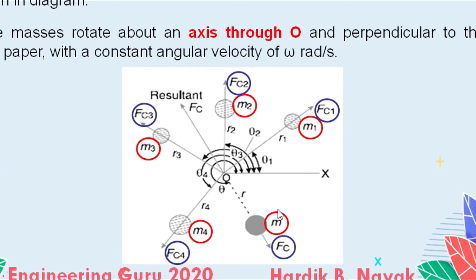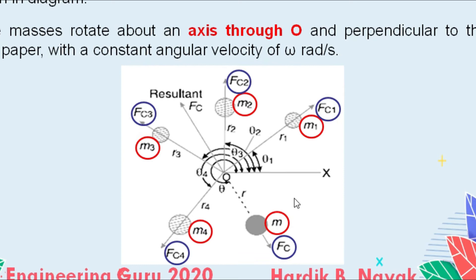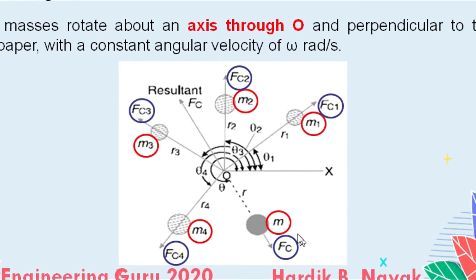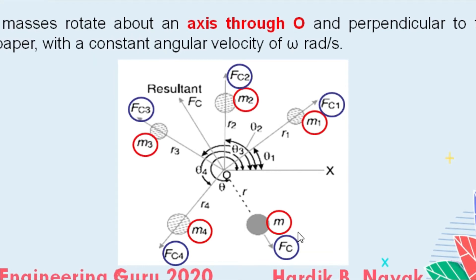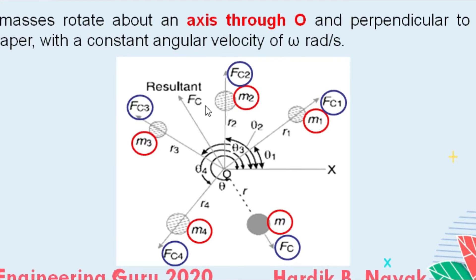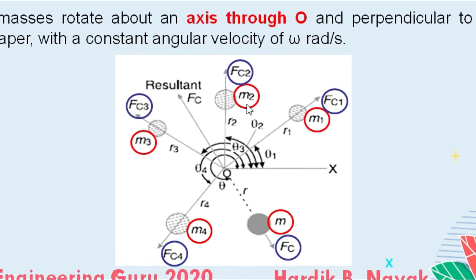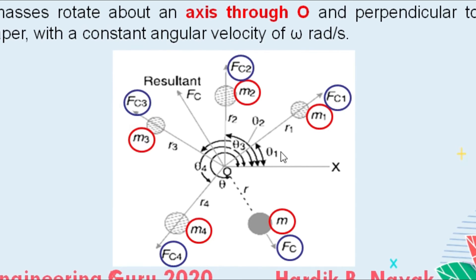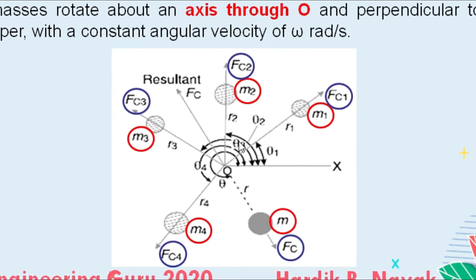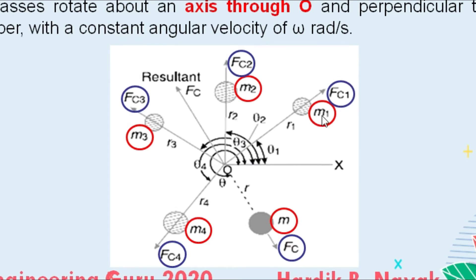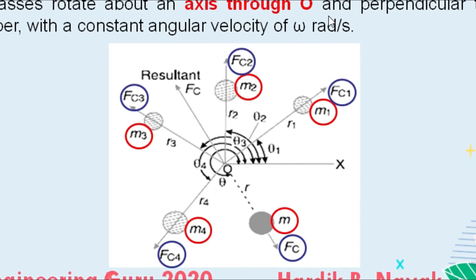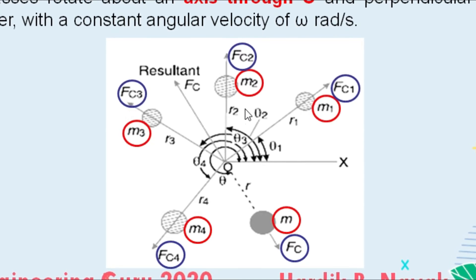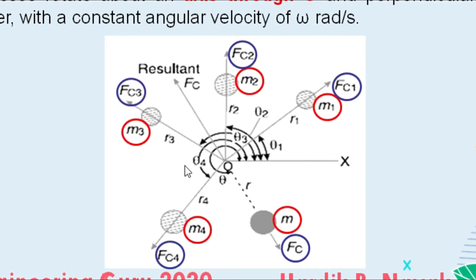Here you can see this small m is the balanced mass, and there is centrifugal force Fc. The angles theta 1, theta 2, theta 3, theta 4 are measured from the O-X line, and the distances are r1, r2, r3, and r4.